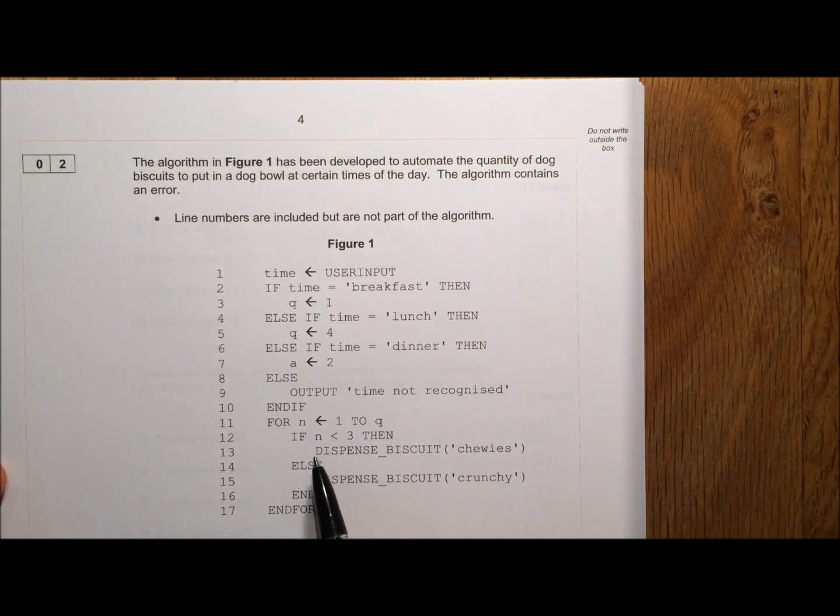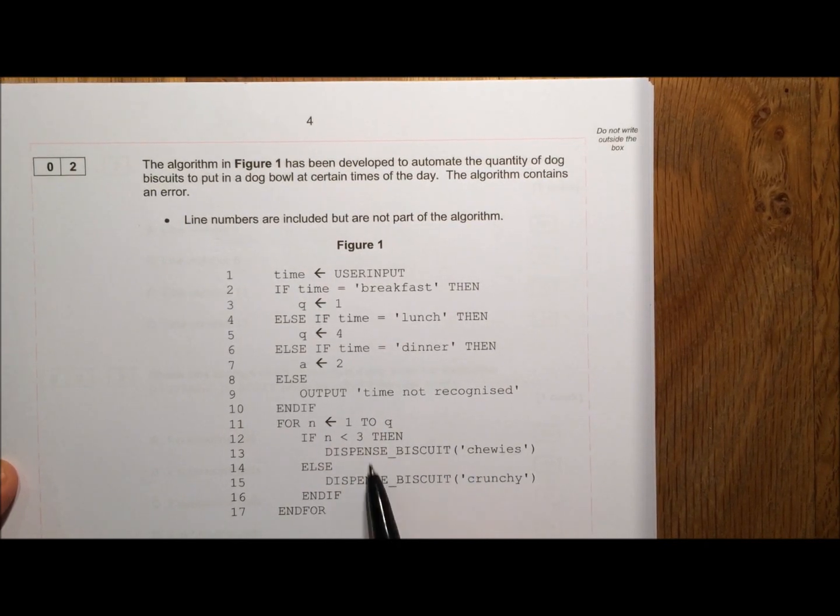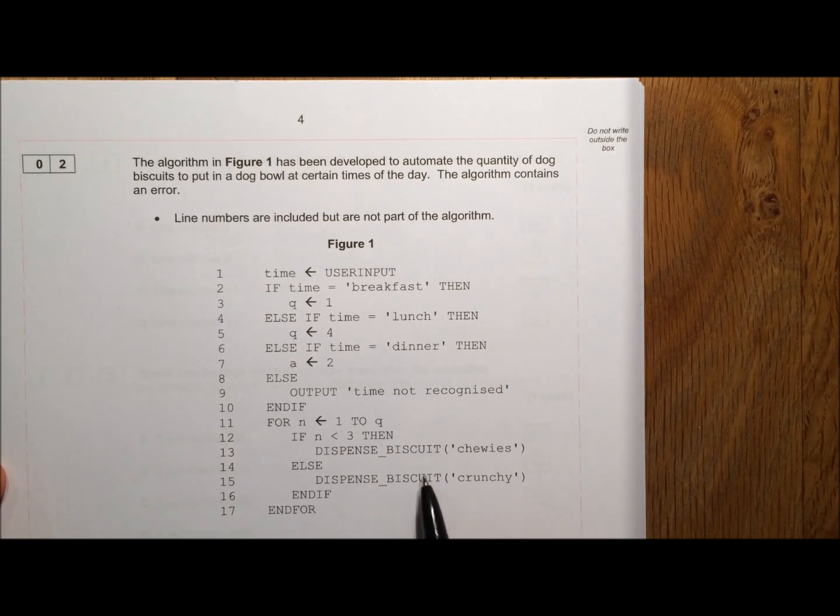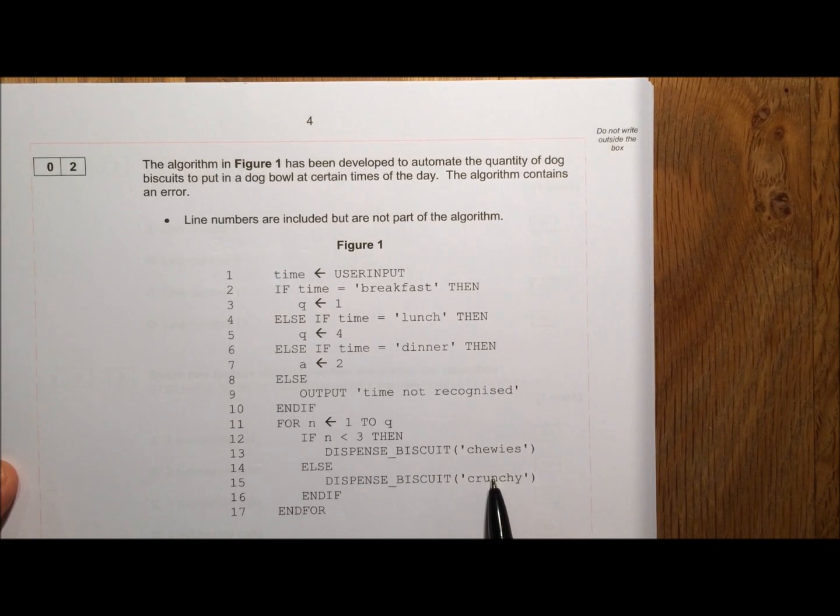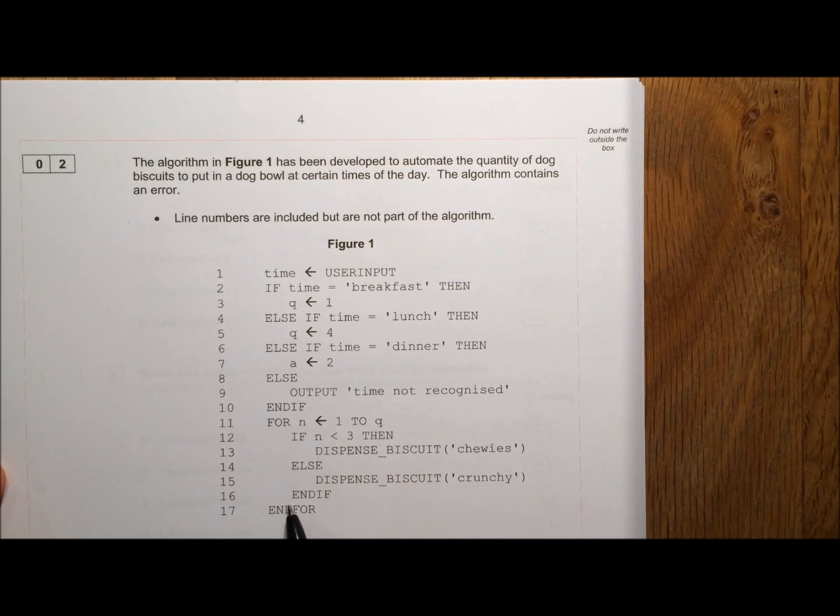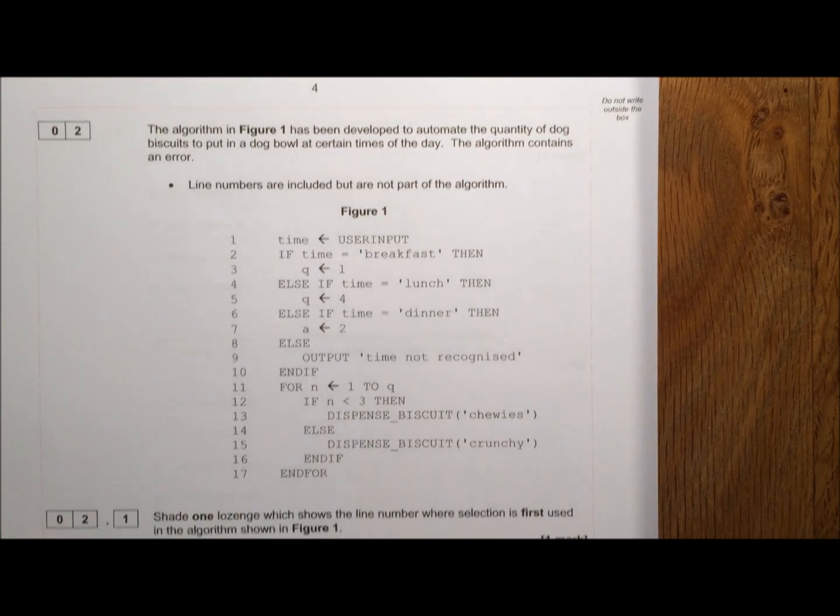If it's not less than 3, if N is not less than 3, then we dispense biscuits. Again, same subroutine, but instead of sending it the value chewies, we're going to send it the value crunchy. We finish that if part, we finish the for part. Let's work out what's going on here.